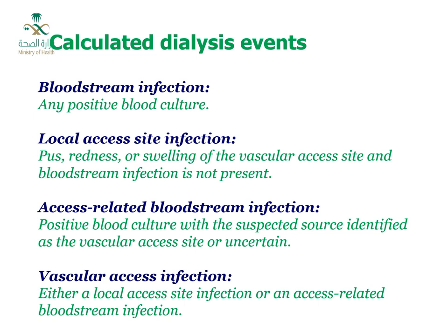The CDC NHSN also defines calculated dialysis events derived from the three event types. Bloodstream infection (BSI) is any positive blood culture. Local access site infection is the presence of pus, redness, or swelling at the vascular access when BSI is not present. Access-related bloodstream infection (ARBSI) is any positive blood culture with the suspected source identified as the vascular access or uncertain. Vascular access infection is either a local access site infection or an access-related bloodstream infection.